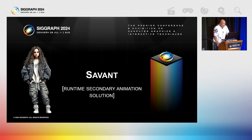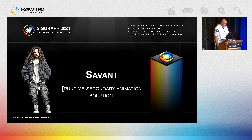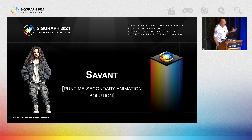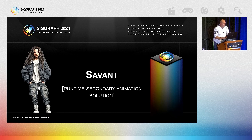Secondary animation is that which includes results from core character motion, and classically on top of that: muscles, cloth, hair, and whatever else we want. Several methods exist for such assets, used in isolation or combination based on the game type, platform, LOD, and so on.